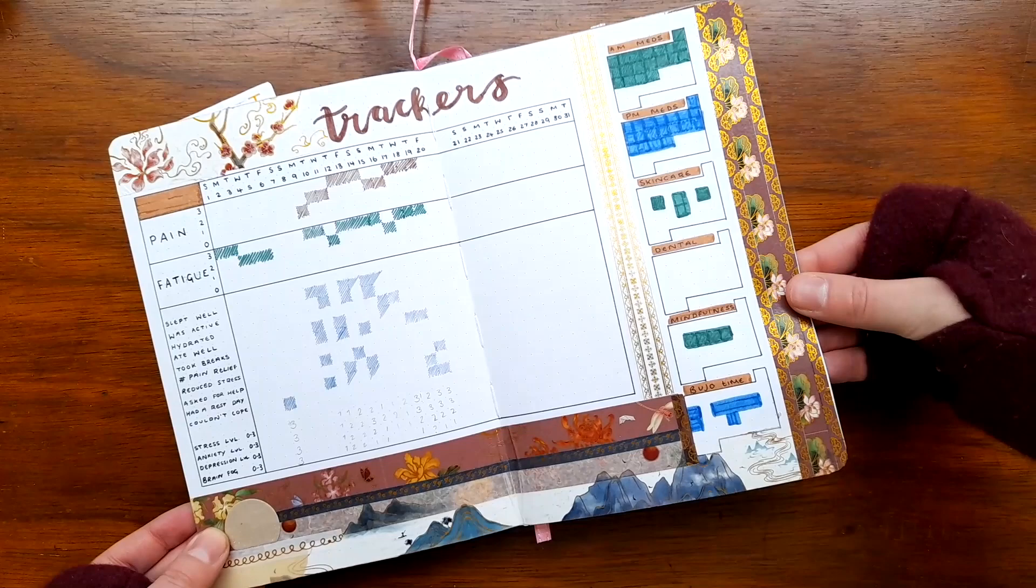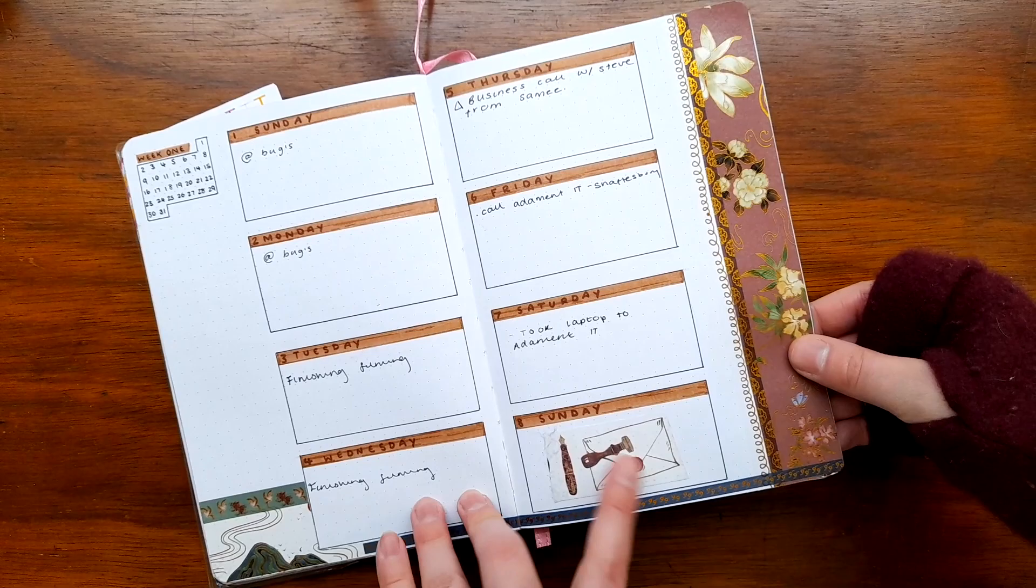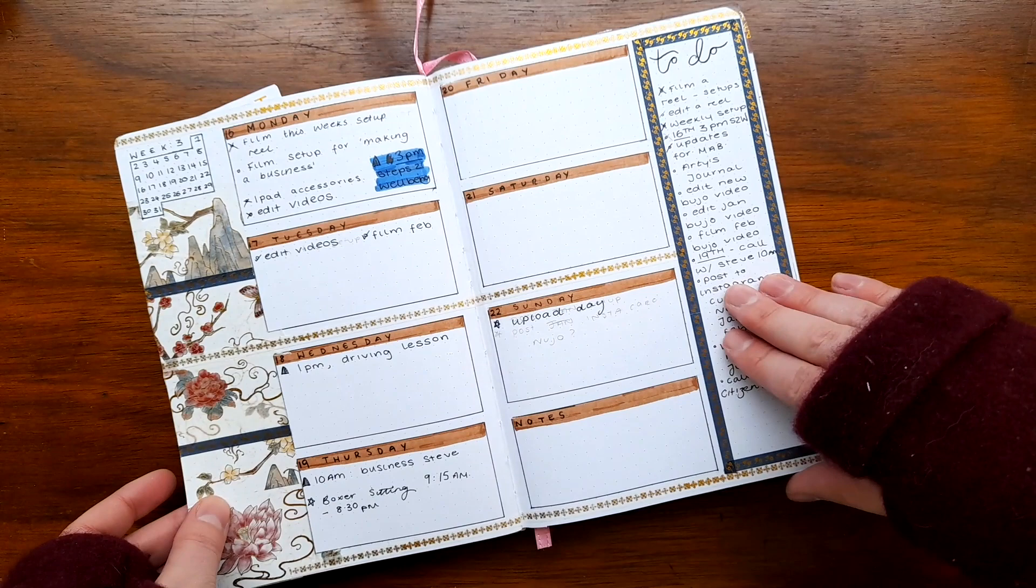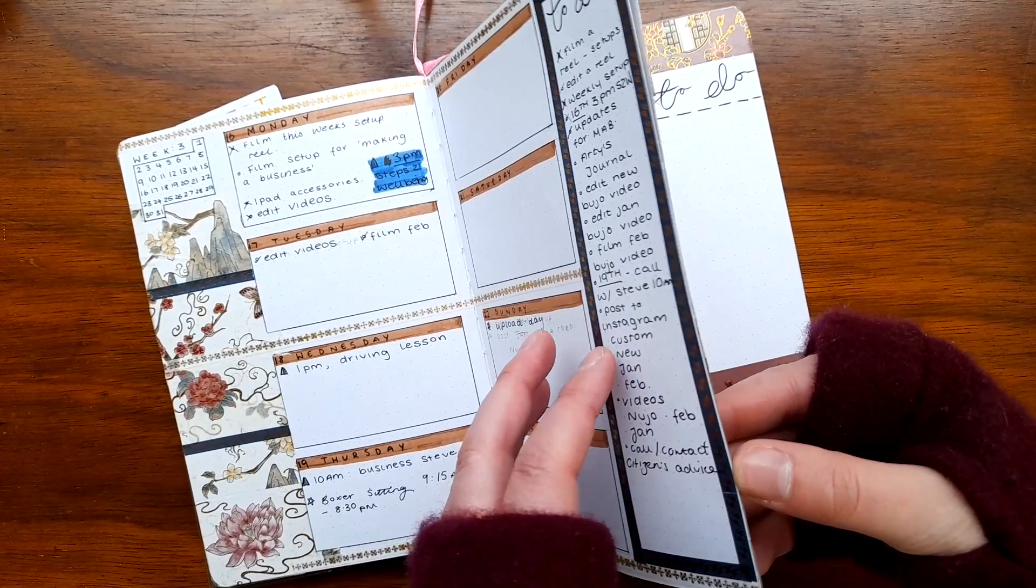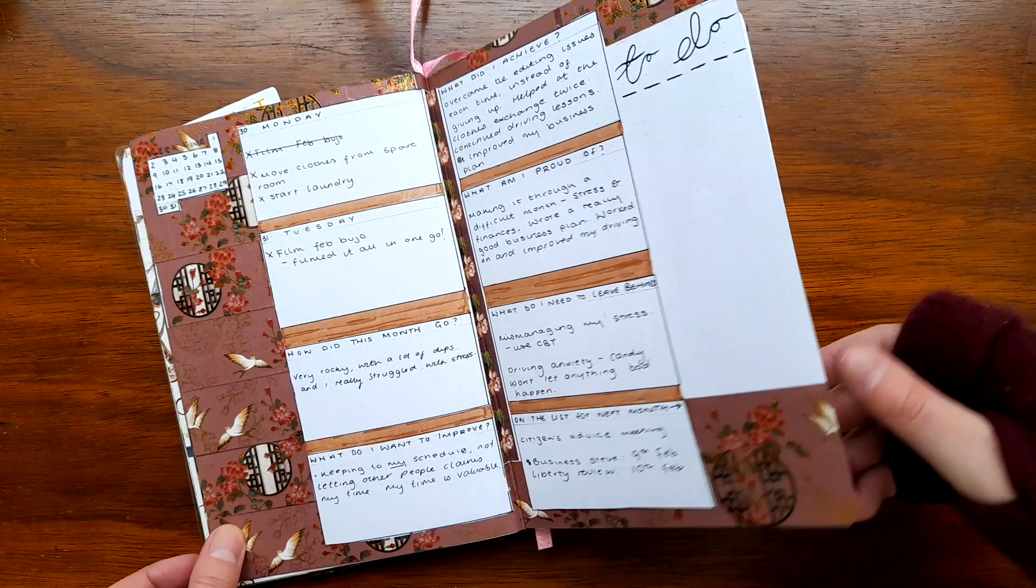Next I have another list page. This is for things that people recommend to me that I normally would forget about but now I have a page to write them down on. This links into the next spread which I've called my library card spread. This page is where I've been writing down the things I consume like games I've been playing, tv shows I've been watching, films and books that I've read. The book section is very empty right now but that's probably because I am gaming more than I am reading at the moment.